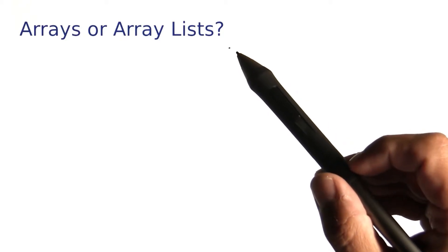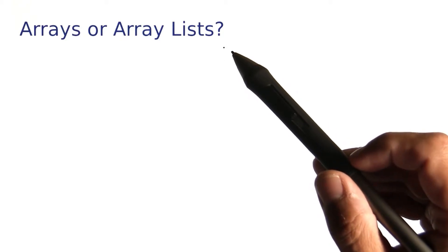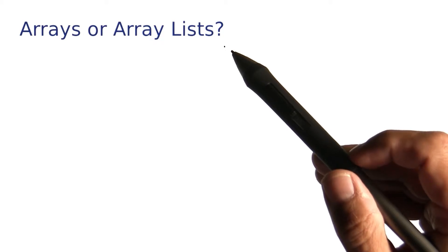So we have arrays and we have ArrayLists, and it's a bit of a nuisance that we have both because it means we have to make a decision between them whenever we want to collect elements.